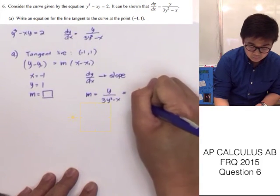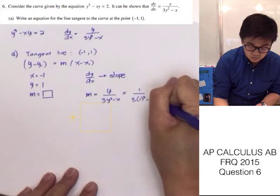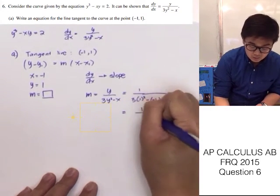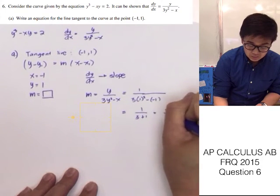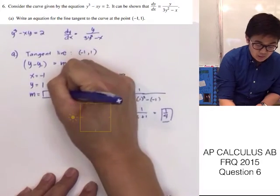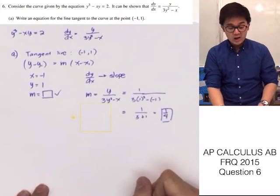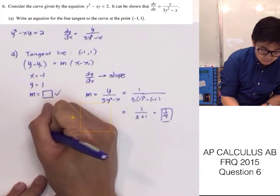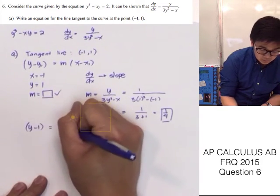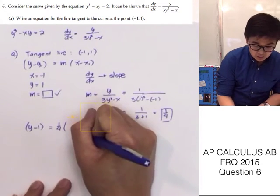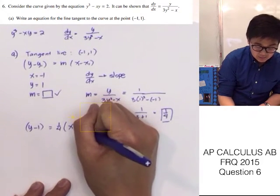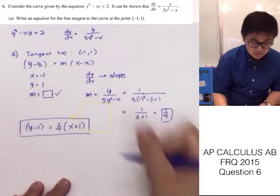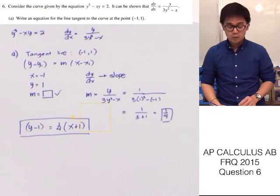Plugging in y equals 1 and x equals negative 1, the slope is 1 over 3 plus 1, which equals 1 fourth. Now that we have x, y, and the slope, we can write the equation of the tangent line as y minus 1 equals 1 over 4 times x minus negative 1, so x plus 1. This is the equation of the tangent line to the point negative 1, 1.